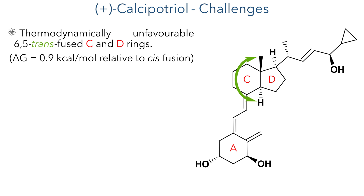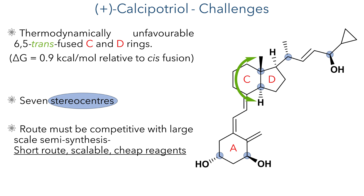These vitamin D type molecules can be quite tricky to synthesise and have been attractive targets with over 90 papers published detailing approaches to their chemical synthesis. These challenges include the trans-fusion between the C and D rings, which is thermodynamically unfavourable with respect to the cis-fused ring system. This molecule also has 7 stereocenters, all of which must be introduced stereoselectively. And unlike most syntheses, it must be competitive with large-scale semi-synthesis, so ideally it should have a short route, be easily scalable and utilise cheap reagents without the need for harsh reaction conditions which can be hard to control on the industrial scale.